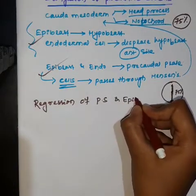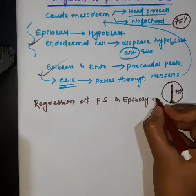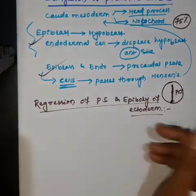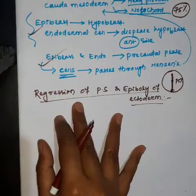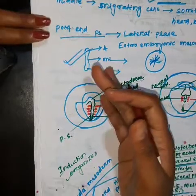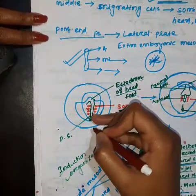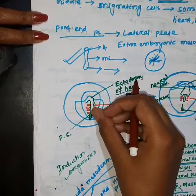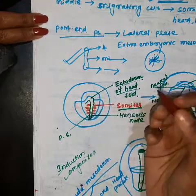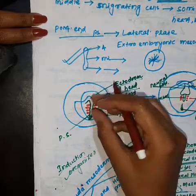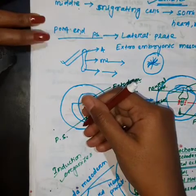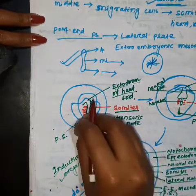The process of epiboly of the ectoderm is also important — epiboly refers to the movement of ectodermal cells surrounding the yolk. These terms — invagination and epiboly — denote cell migration and movement. Regarding regression of the primitive streak: the mesodermal ingression continues, the primitive streak starts to regress, and Hansen's node moves. Hansen's node was previously at the top/anterior position.